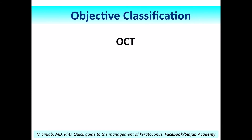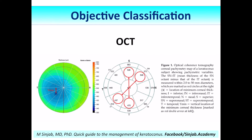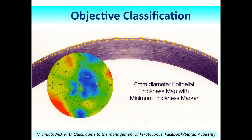The OCT also has its own part in the classification of ectatic corneal disorders, depending on some parameters, especially based on the pachymetry map. But the most advanced recent technology is the epithelial thickness mapping, the ETM. It gives a map of the epithelium in the central 6mm zone, and the thinning of the epithelium is a very early sign of ectatic disorders that precedes the focal thinning of the stroma in these diseases.